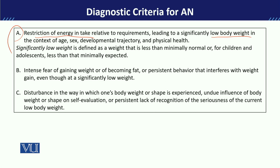When we say significantly low weight, it means below the normal or minimum expected weight. You also need to keep in mind — as we have seen in depression, people also lose weight. So you have to check whether this pattern has only been happening for the past two weeks, in which case you should identify symptoms of depression instead. Anorexia nervosa involves a sustained period — the pattern is happening over many months.